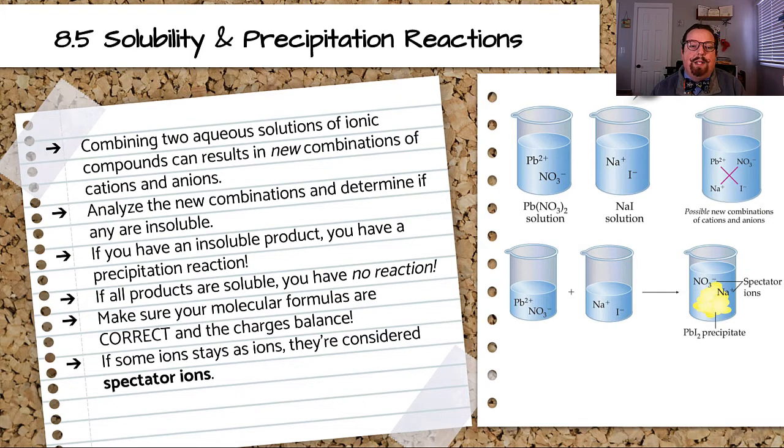Now check your solubility rules and see if one of them is insoluble. If there is an insoluble product, it forms a solid and precipitates out of solution, so you have a precipitation reaction. If you mix two solutions of ions together and no precipitate is formed, then you did not have a chemical reaction because the ions don't change.